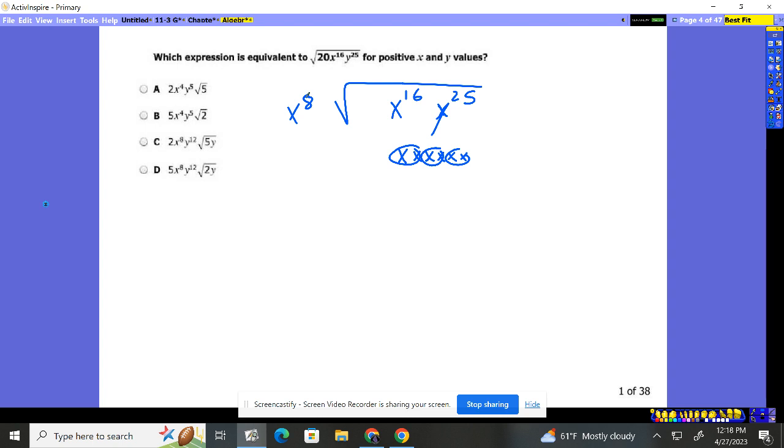You have 25. There's a pair, there's a pair, there's a pair. Once you get to 24 of them, you can see 12 are coming out with one left behind. So right now we know it's X to the eighth outside, Y to the 12th outside, inside is a single Y left over.